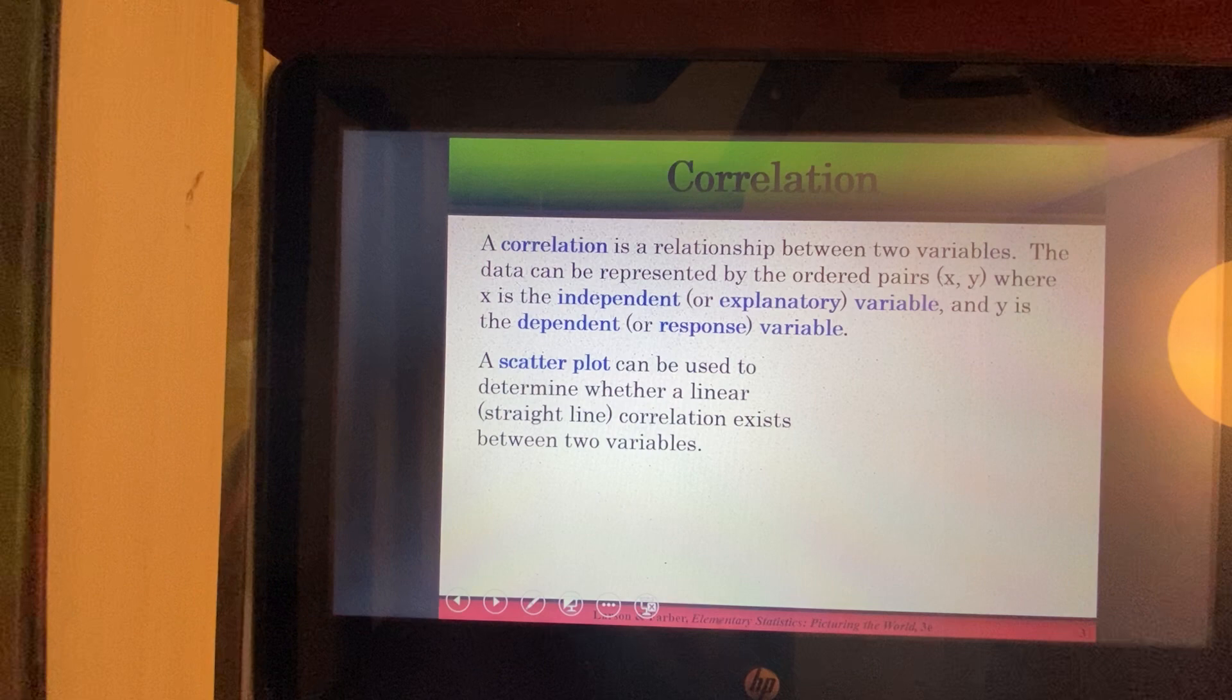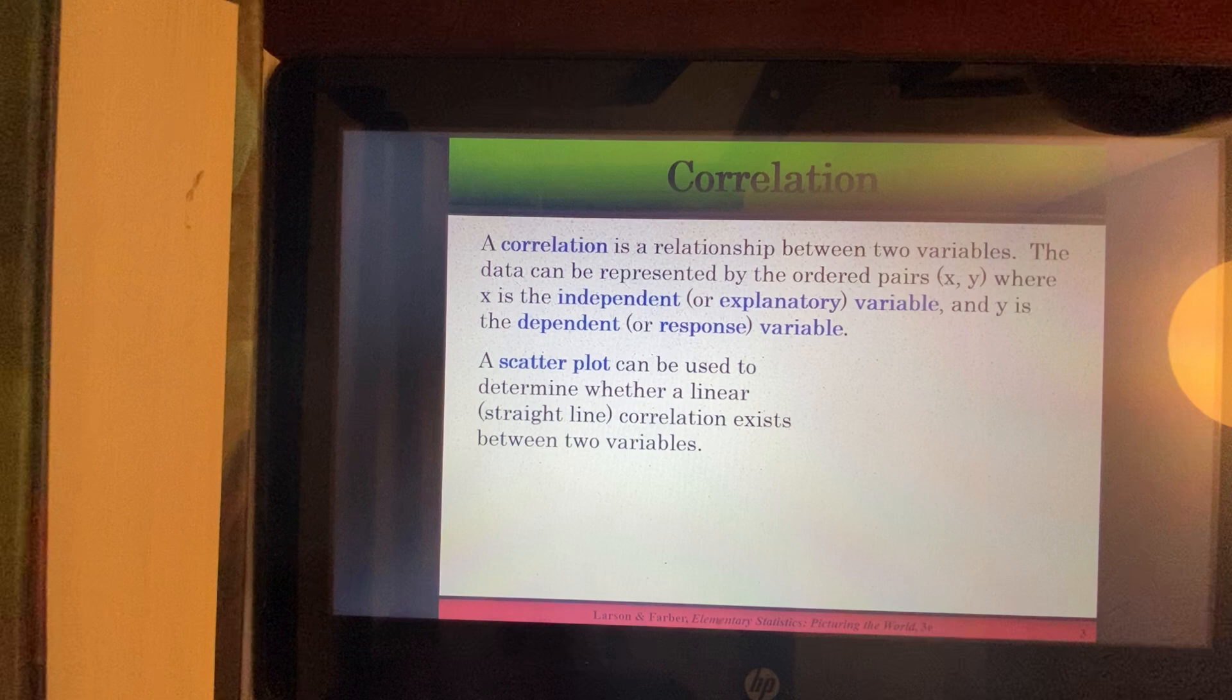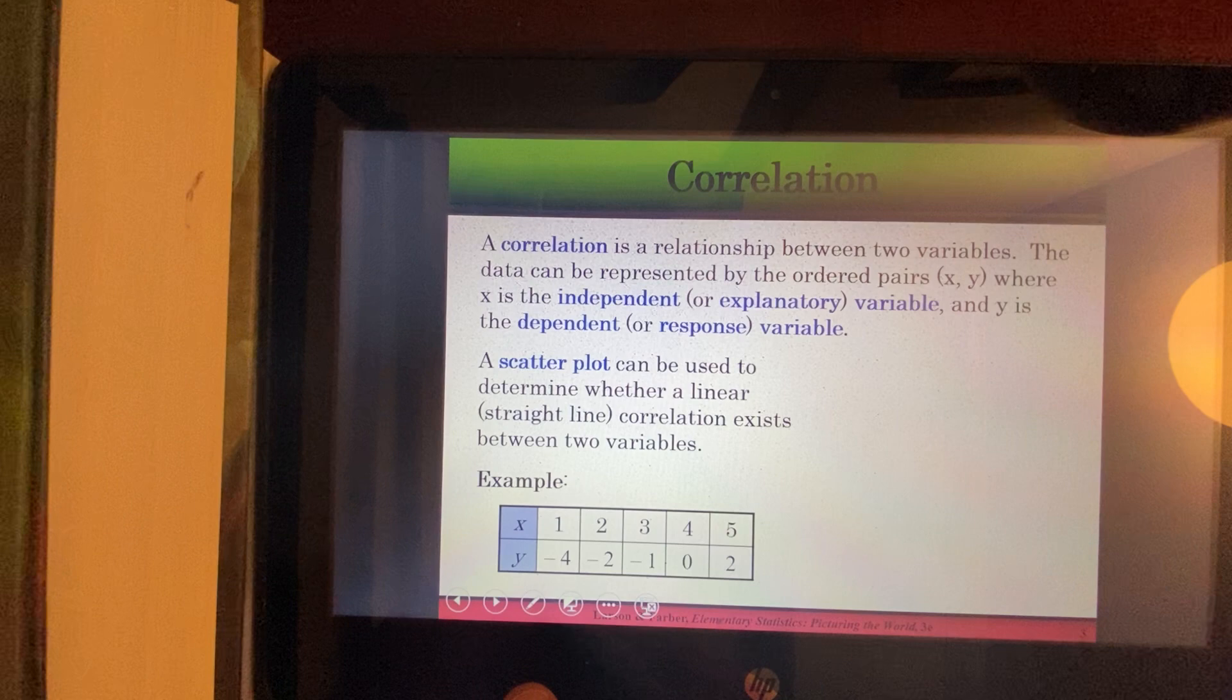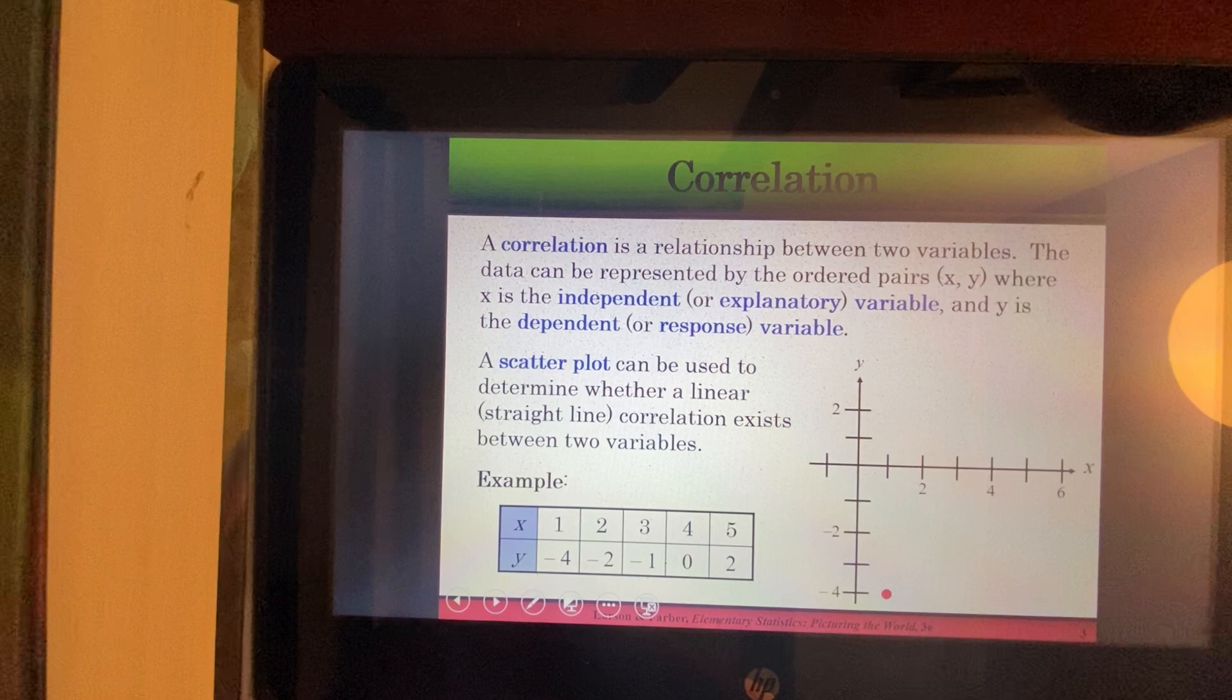A scatter plot can be used to determine whether a linear correlation exists between two variables. So, linear means that a good fit would be if we could draw a straight line through it. And here's an example of some data where I have x's listed with y's. And we could plot each one of those five points on our scatter plot.